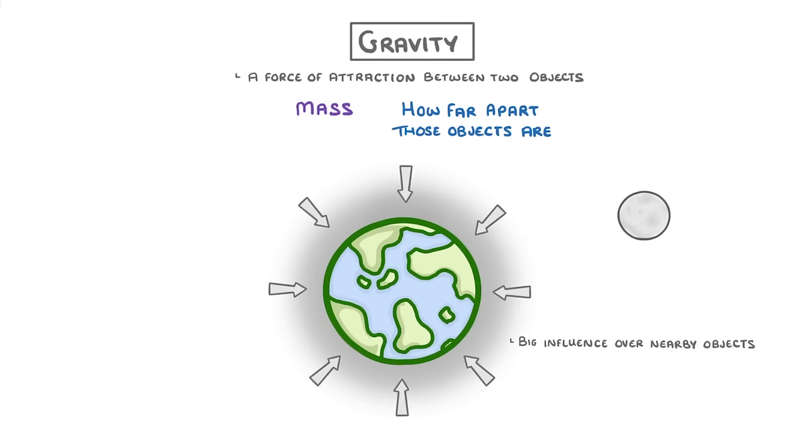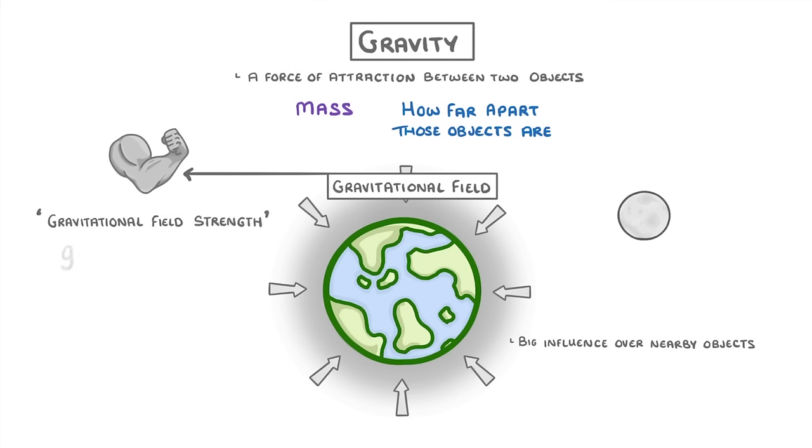We call this field of influence around an object its gravitational field, and the strength of this field is called the gravitational field strength, which we show with the letter G.